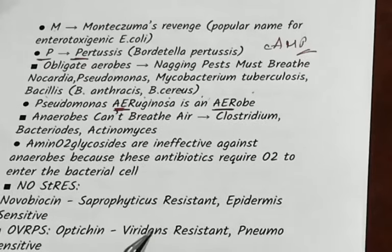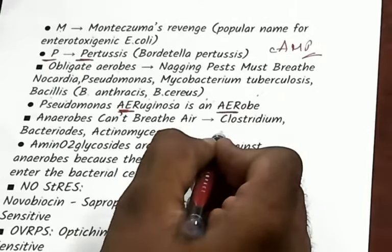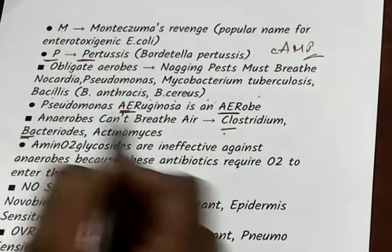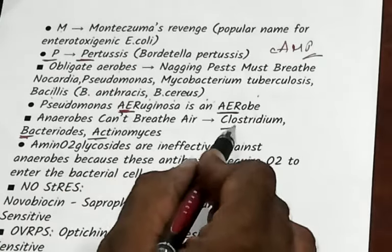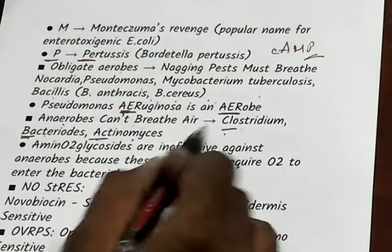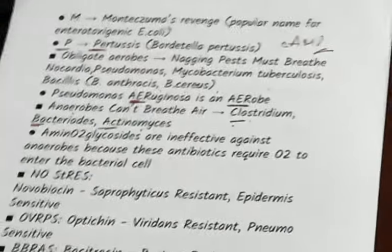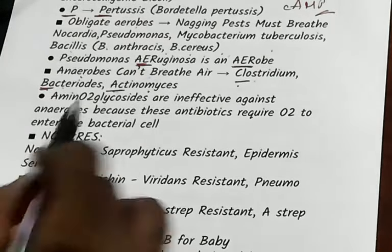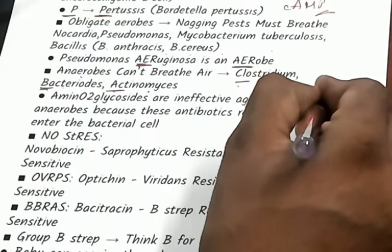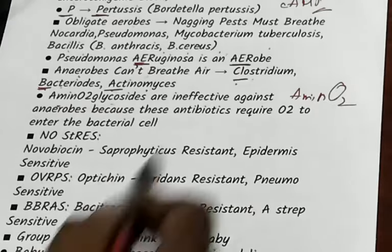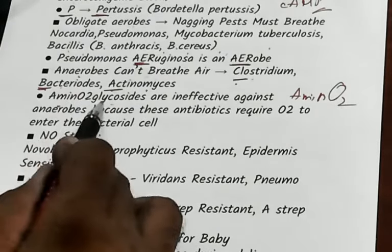Anaerobes cannot breathe the air. C is Clostridium, B is Bacteroides, A is Actinomycetes — anaerobes cannot breathe the air. And why are aminoglycosides ineffective against anaerobes? Because aminoglycosides require oxygen for uptake — if there is no oxygen, they are ineffective against anaerobes.